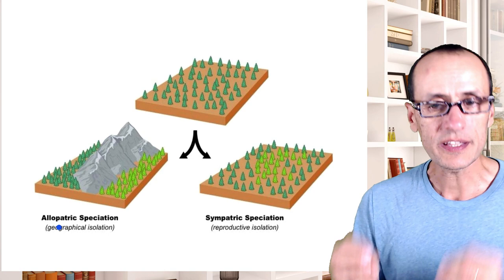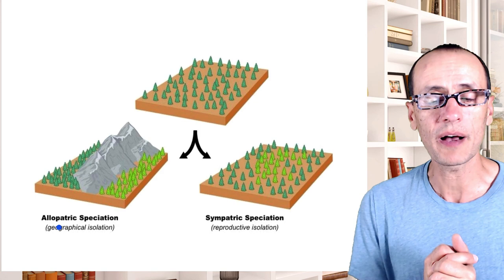So in the next lecture, what we're going to look at is what evidence points to the possibility that some of these genetic changes could actually be happening in ecological time.